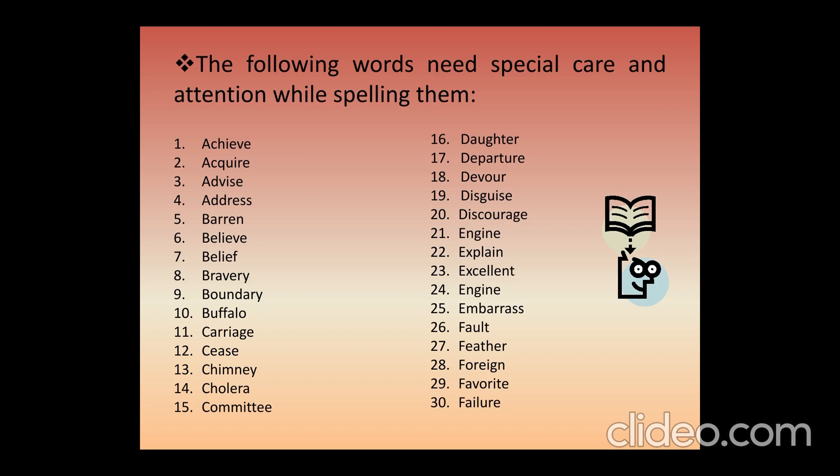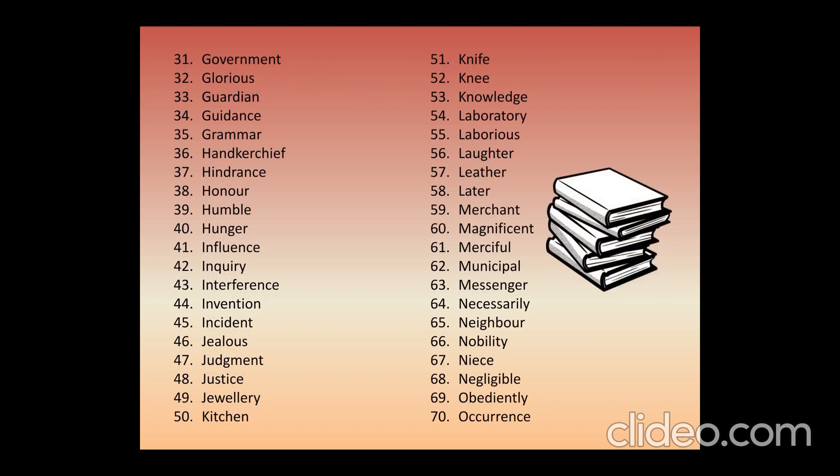Daughter, departure, discourage, engine, explain — and 'embarrassed' again has two double letters: double R and double S. Just study them carefully so that you don't make a mistake in future.